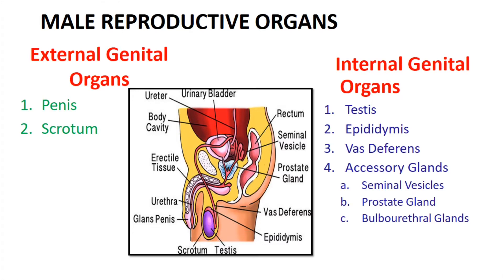The organs which are on the outside of the body are the external genital organs. The organs inside of the body related to reproduction are the internal genital organs.